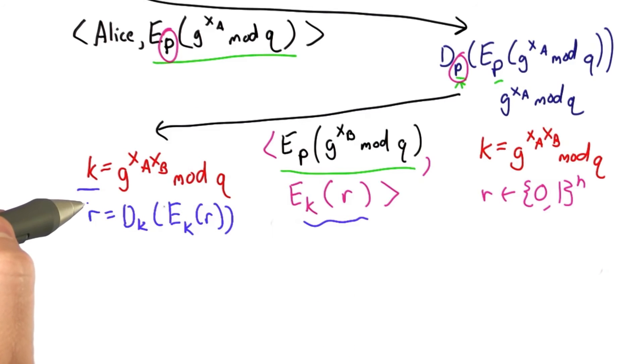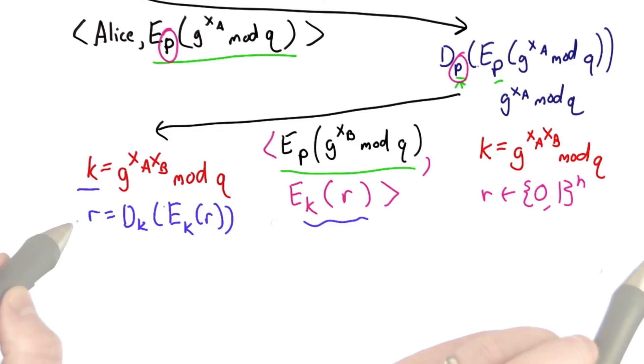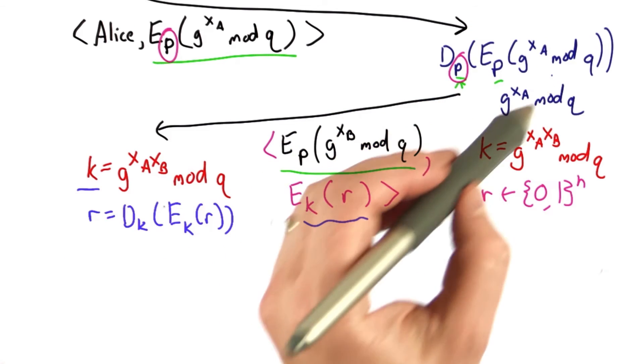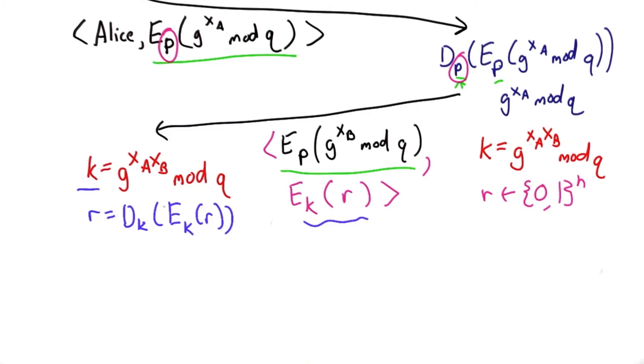This effectively demonstrates to Alice that she's talking to the right server, at least a server that knew her password, because the key that's produced here could only be produced correctly if the server was able to decrypt the message that Alice sent, encrypted with that password.